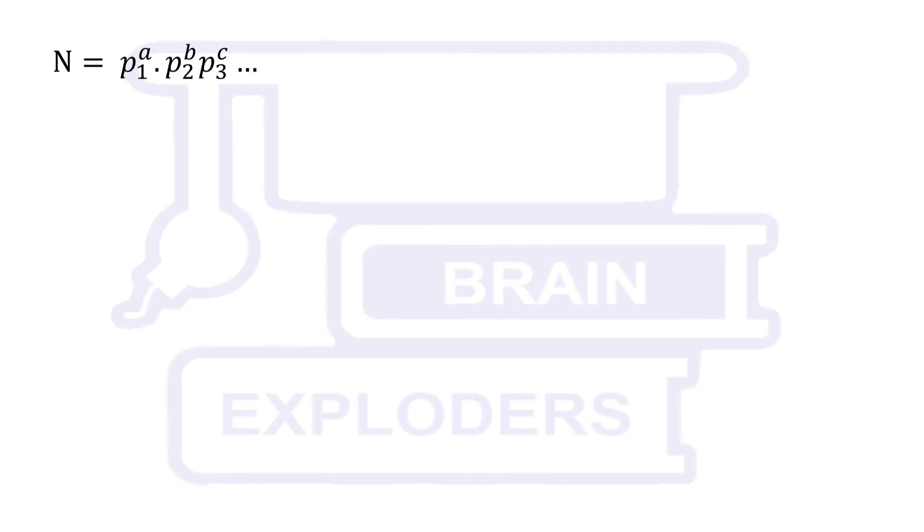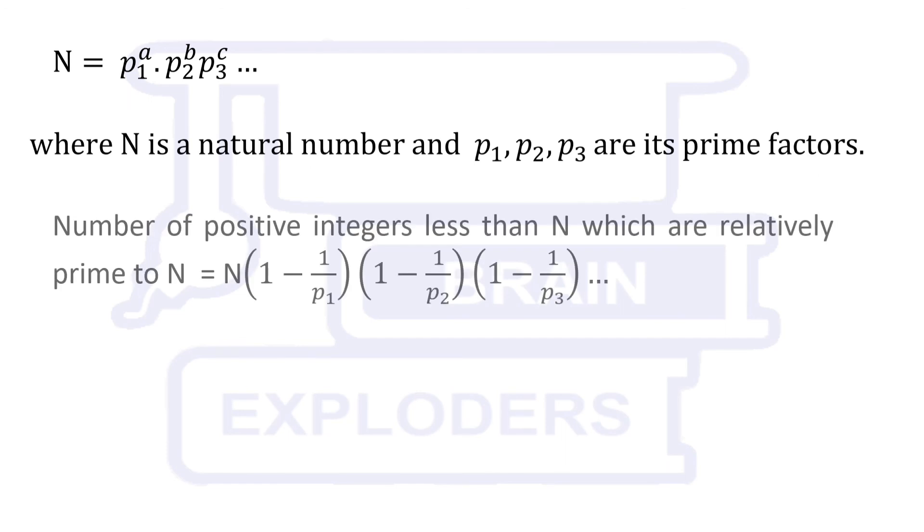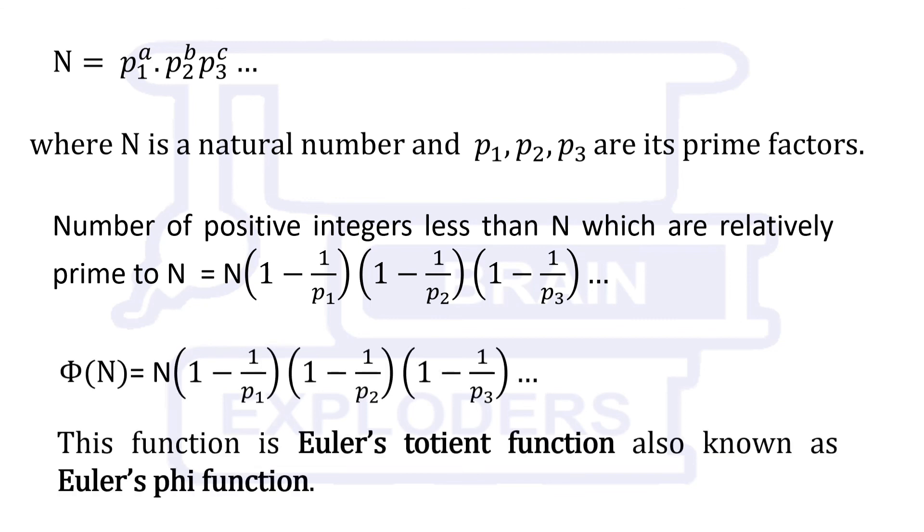In general, φ(N) = N(1 - 1/p₁)(1 - 1/p₂)(1 - 1/p₃)... where N is a natural number and p₁, p₂, p₃ are its prime factors. This function is Euler's Totient function, also known as Euler's phi function.